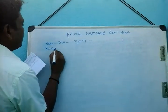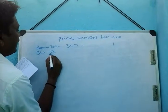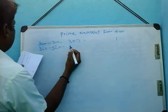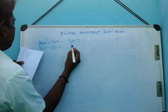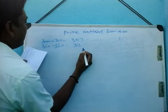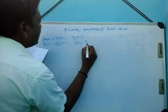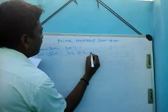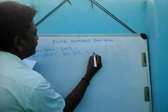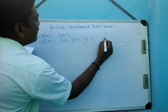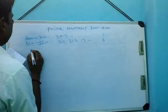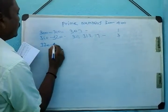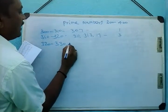310 to 320: there are three prime numbers — 311, 313, and 317. Totally three prime numbers between 310 to 320.